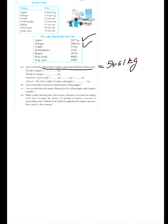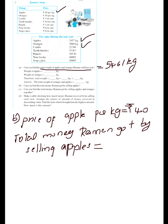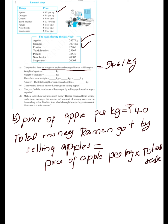Now let's see part B: can you find the total money Ramen got by selling apples? The price of apple per kg is 40 rupees. The total money Ramen got by selling apples equals price per kg into total sale — that is 40 into 2457 kg.